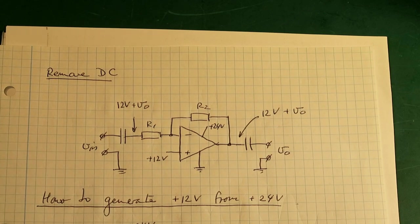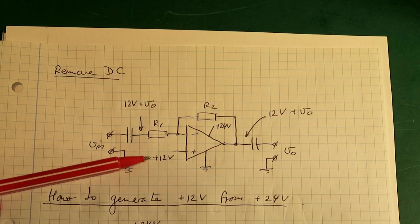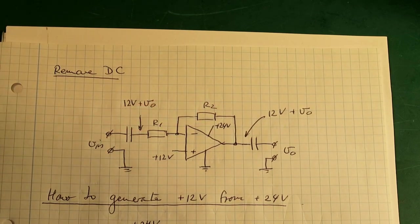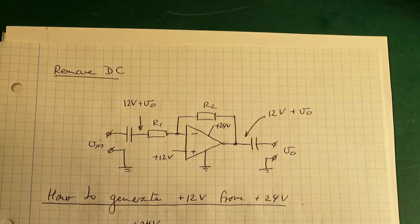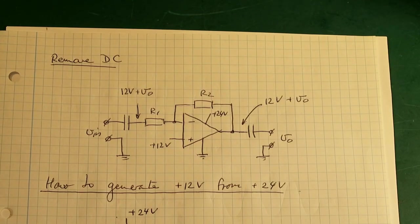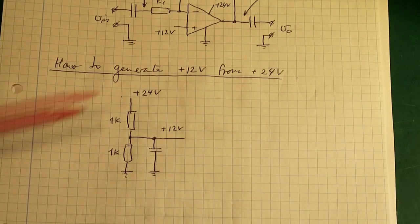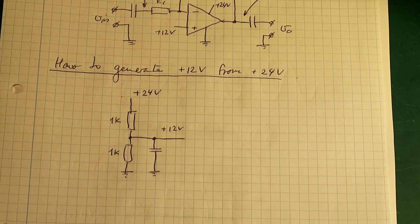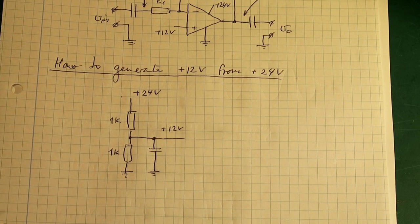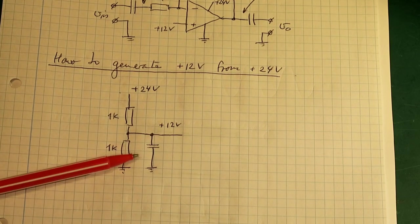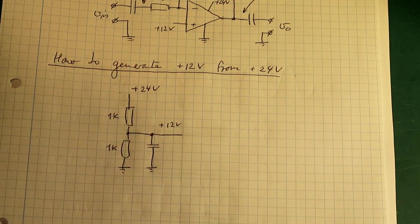So we have one issue left. We need to generate this 12 volt in the middle here. Because now I have a power supply that can generate 24. This one here. And then I need a plus 12 volt in the middle. And the easiest way is to simply use a resistor divider. I have chosen 1 kilo ohm resistors because that will give a fairly stable voltage. And I stabilize a little bit with another capacitor here 100 nano or something like that. And then we have 12 volt out here.